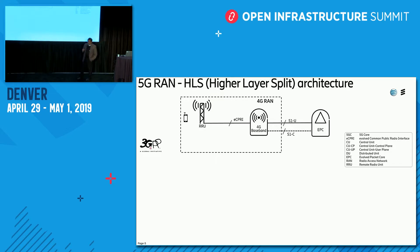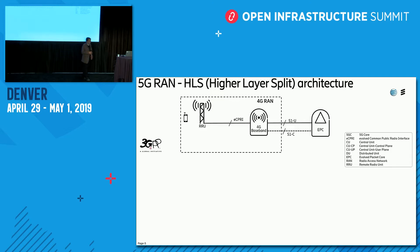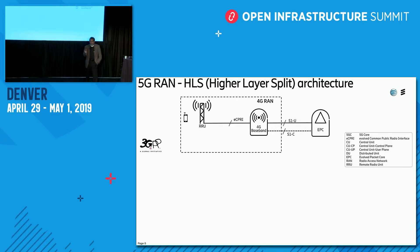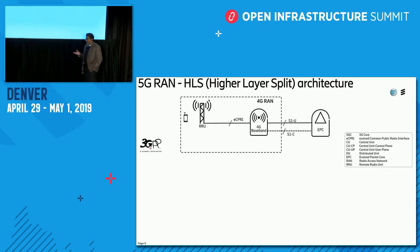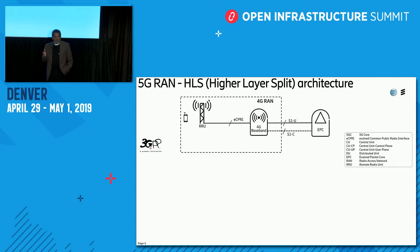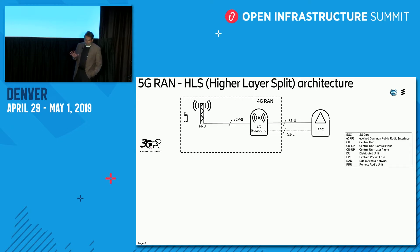What I wanted to discuss is the higher-layer split architecture of 5G RAN and what it enables in terms of virtualization and cloudification. In a simpler form, today in 4G RAN we have a baseband unit and a remote radio unit — those are the two main components. Mobiles communicate with the RRUs on one side, and the packet core is on the other side.